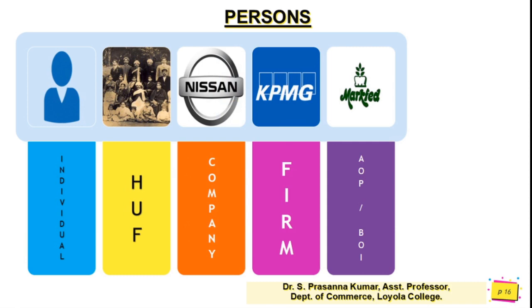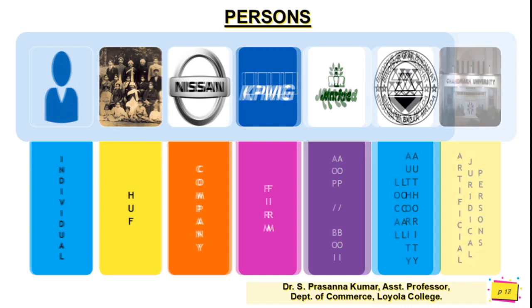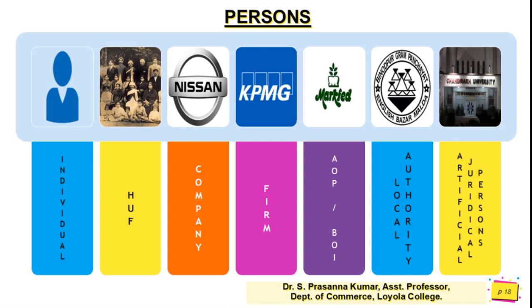The fifth type of person is an Association of Persons (AOP) or Body of Individuals (BOI) — a combination of any of the listed persons; an example is Markfed (Marketing Federation), constituted in each state. The sixth is local authority, such as gram panchayats, municipalities, and corporations. The seventh is artificial juridical persons, which include universities, colleges, and schools.